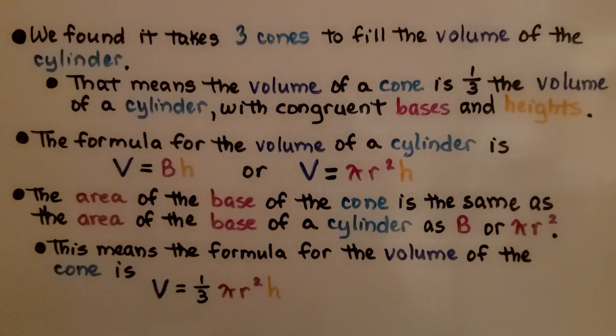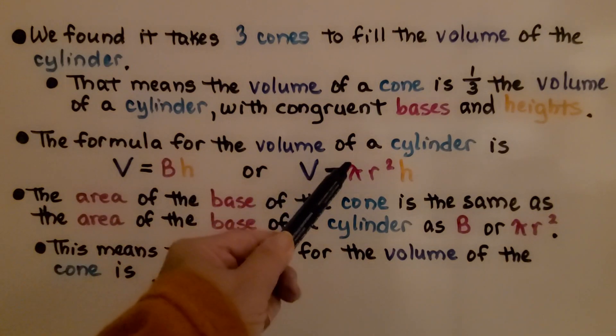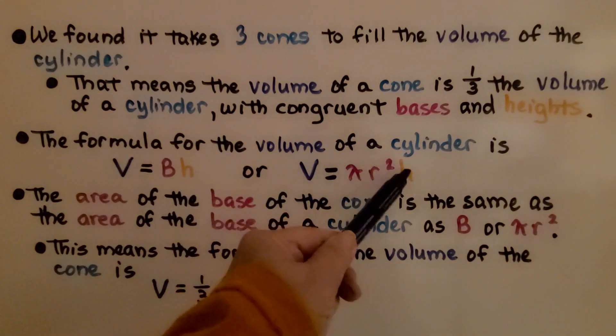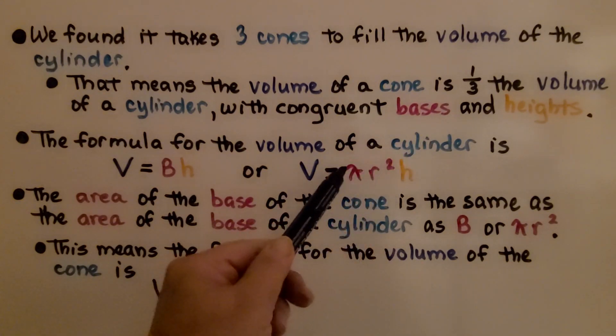We found it takes three cones to fill the volume of the cylinder. That means the volume of a cone is one-third the volume of a cylinder with congruent bases and heights. The formula for the volume of a cylinder is V = Bh or V = πr²h. Since the cone's base area equals the cylinder's, the formula for the volume of a cone is V = (1/3)πr²h, one-third of the cylinder's formula.